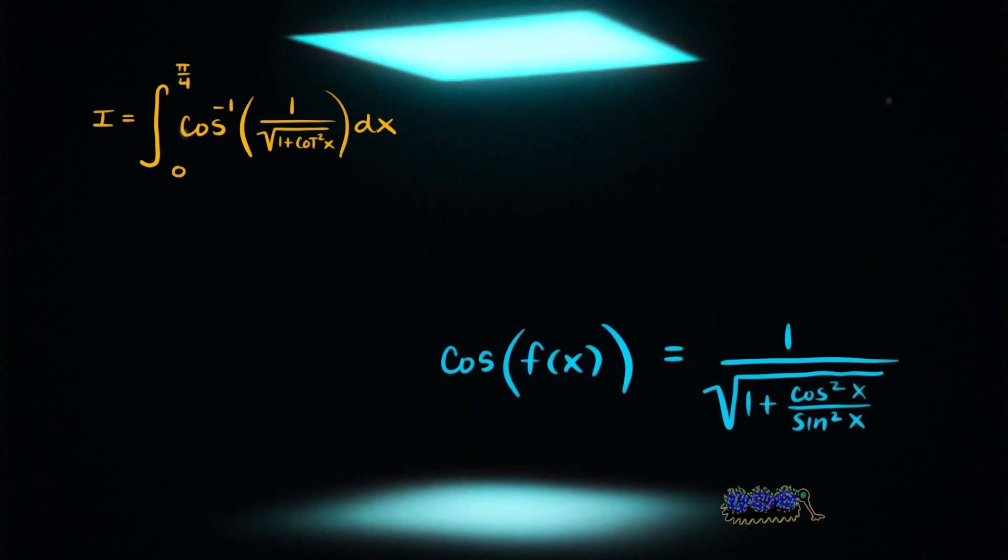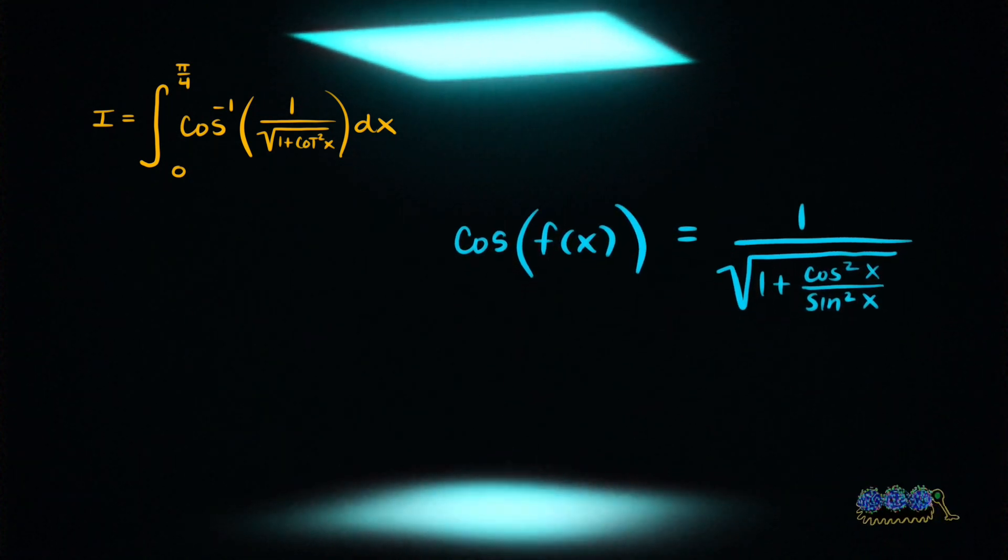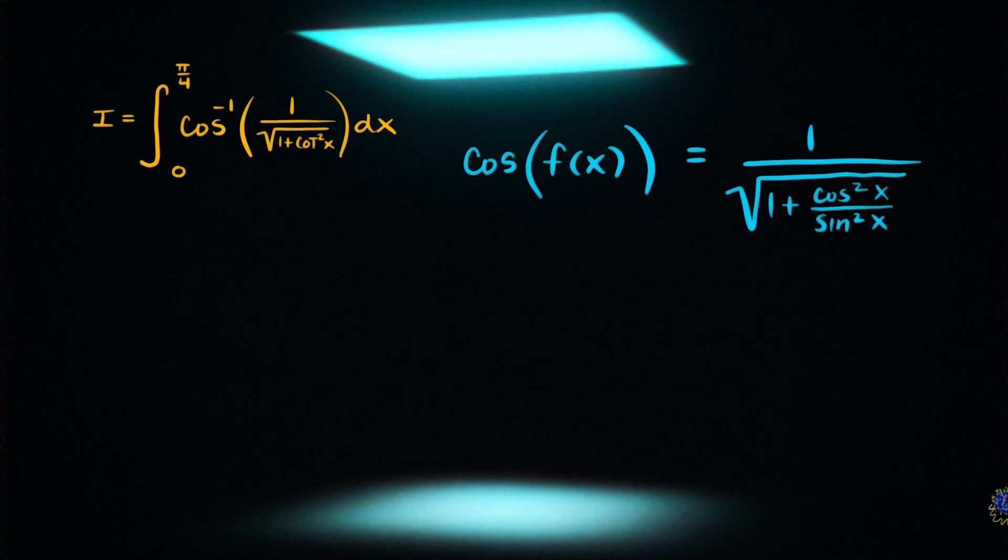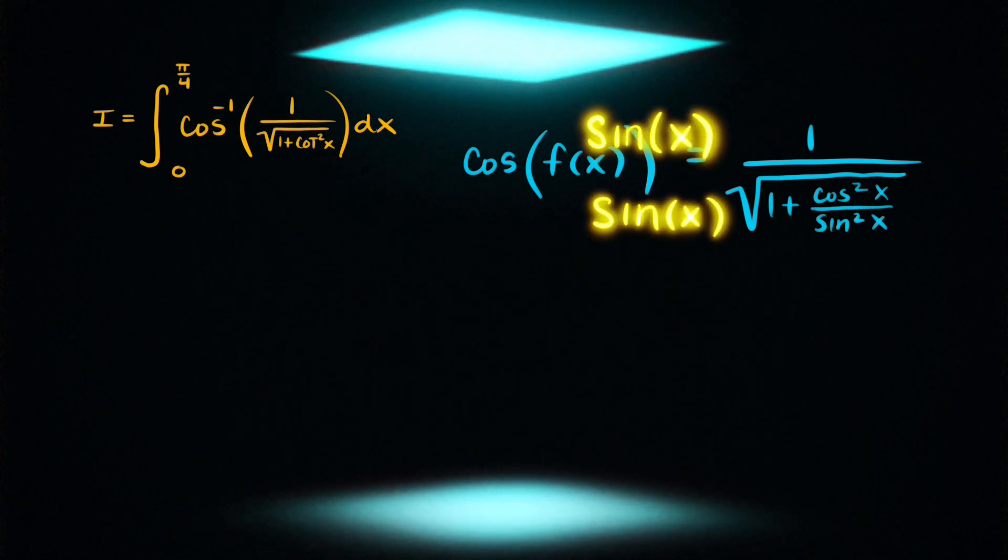So what I'm going to do here is I'm going to absorb a sine squared into that radical by multiplying both the top and the bottom of that fraction with sine of x.